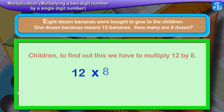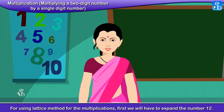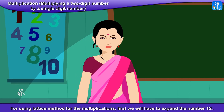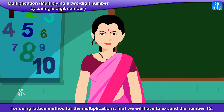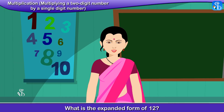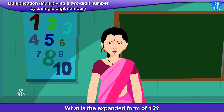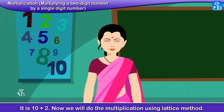12 multiplied by 8 is equal to 96. So, 8 dozen bananas means 96 bananas. For using the lattice method for multiplication, first we will have to expand the number 12. The expanded form of 12 is 10 plus 2.